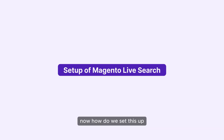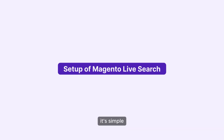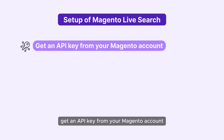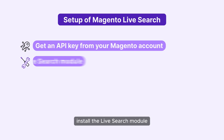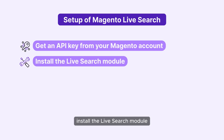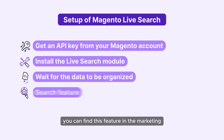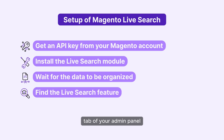Now, how do we set this up? It's simple. Get an API key from your Magento account, install the Live Search module, and let the data organize itself. You can find this feature in the Marketing tab of your Admin panel.